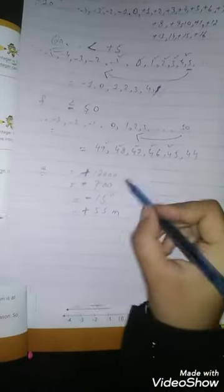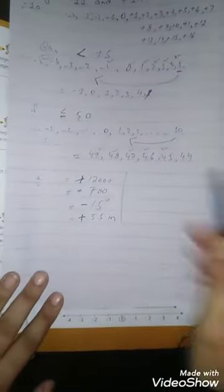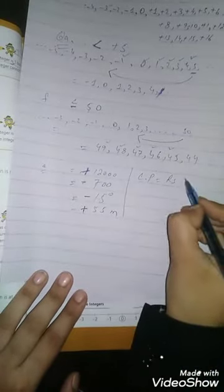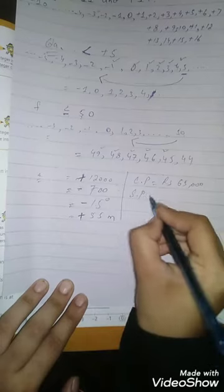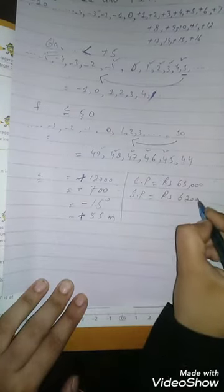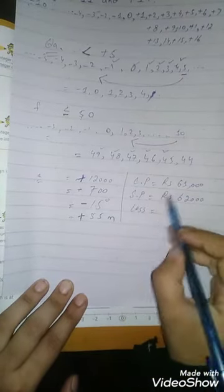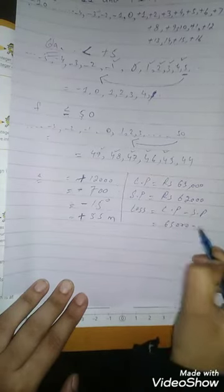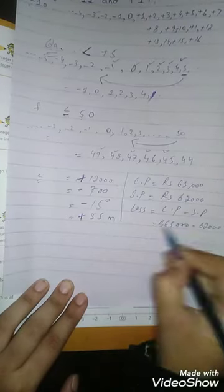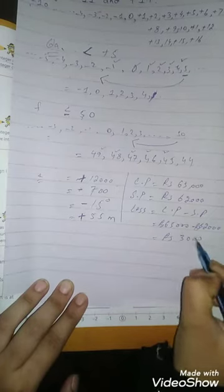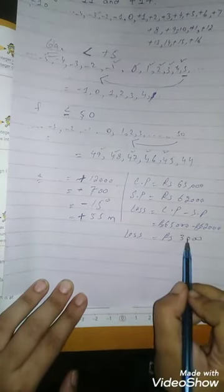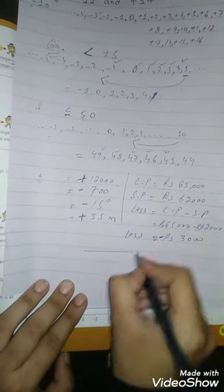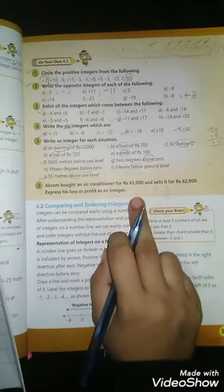Question number 6: Akram bought an air conditioner for 65,000 rupees and sold it for 62,000 rupees. Express this as an integer showing loss or profit. The cost price is 65,000 and the sale price is 62,000, so Akram has a loss. Loss equals sale price minus cost price: 62,000 minus 65,000 equals minus 3,000. The loss of 3,000 rupees is shown as a negative integer. If there had been a profit, we would show it with a positive integer. Allah Hafiz.